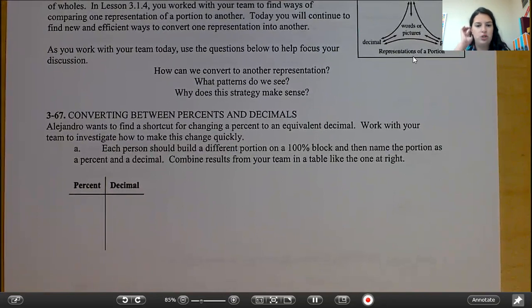Each person should build a different portion on a 100% block and then name the portion as a percent and a decimal. Combine the results from your team in a table like the one at right.